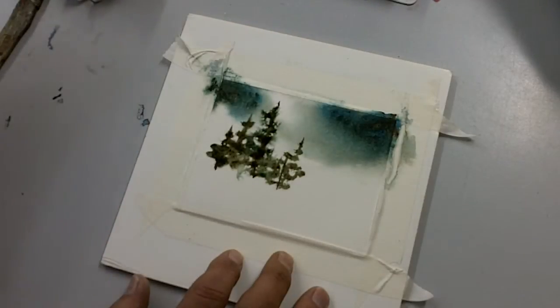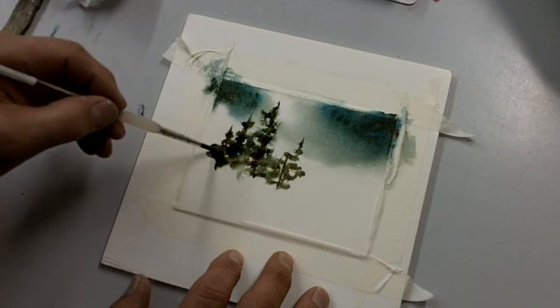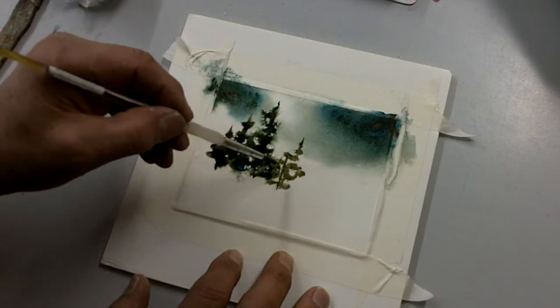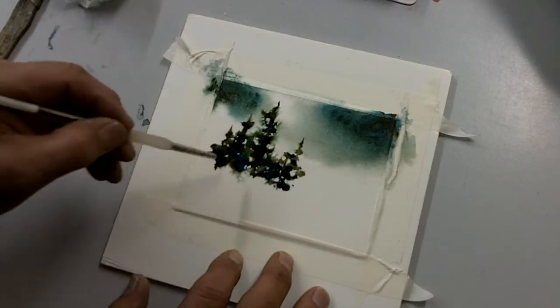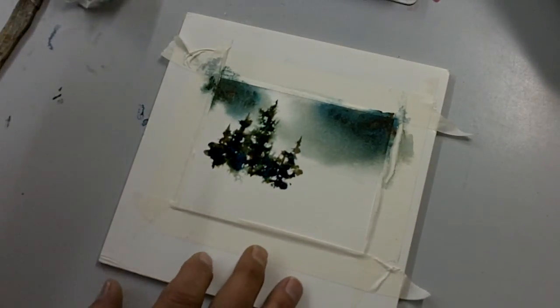If we want to add a little more color, we can take blue and just dab here and there down the bottom. It should be a little denser because of the shadows and stuff. See, look at that.